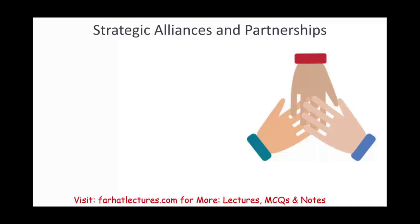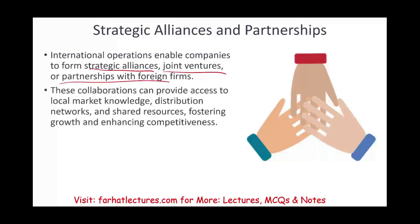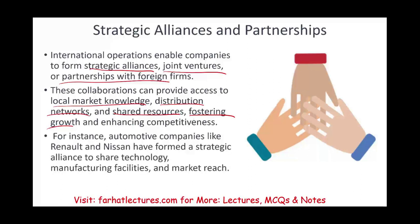Expanding overseas also enables companies to form strategic alliances, joint ventures, and partnerships. These collaborations give access to local market knowledge and distribution networks. In some countries — like Dubai, UAE — you cannot do business unless you have a local partner. You can share resources, achieve faster growth, and enhance competitiveness. A good example is Renault (France) and Nissan (Japan), who formed a strategic alliance to share technology, manufacturing facilities, and market reach.